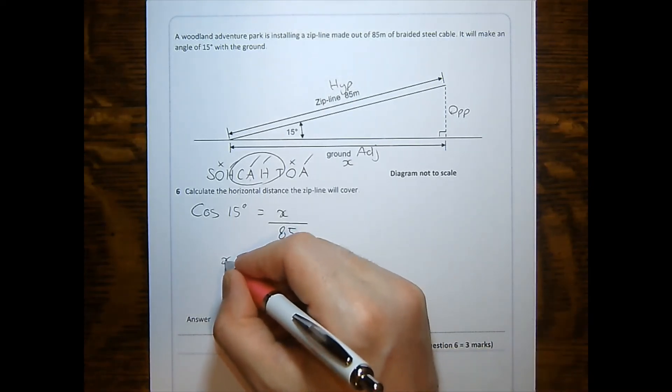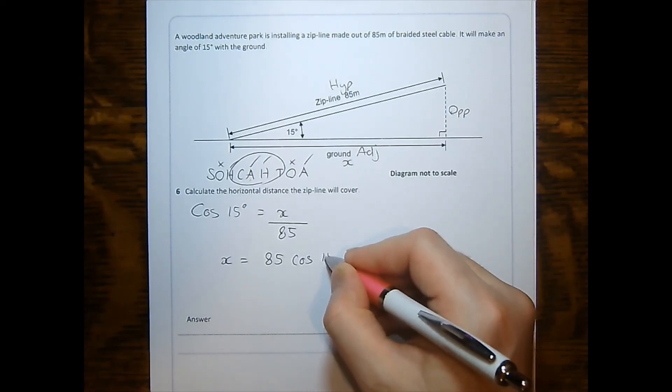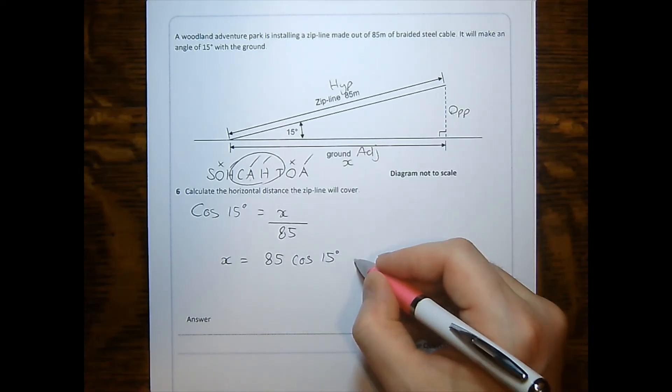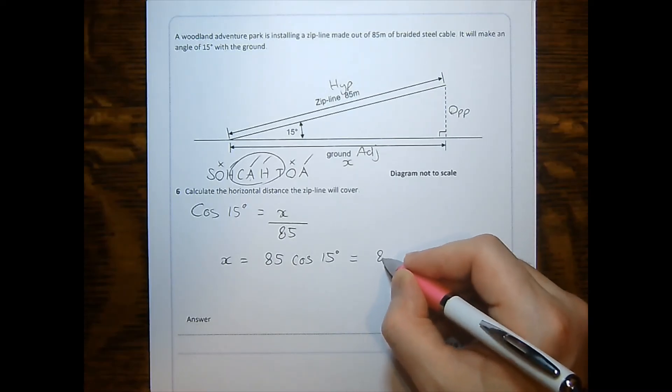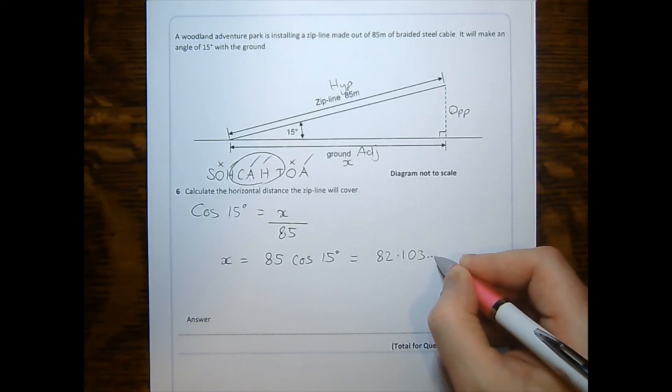This is quite a simple rearrangement. X is equal to 85 cosine 15 degrees, which in the calculator I get as 82.103 etc, which means I can round it to 82.1 meters to three significant figures.